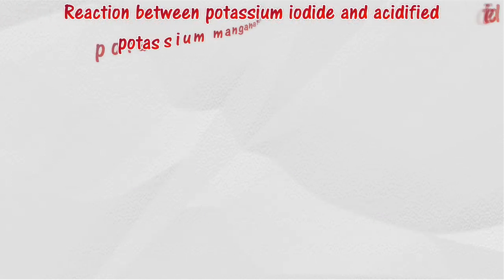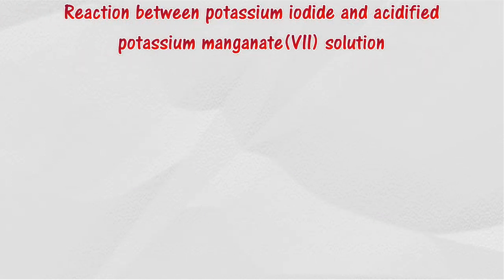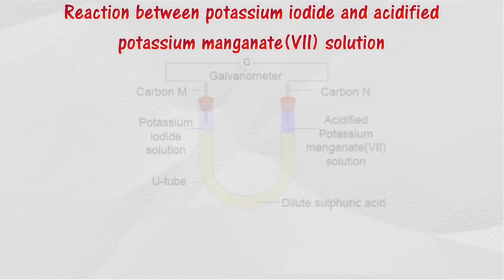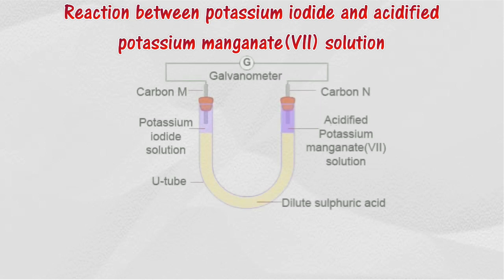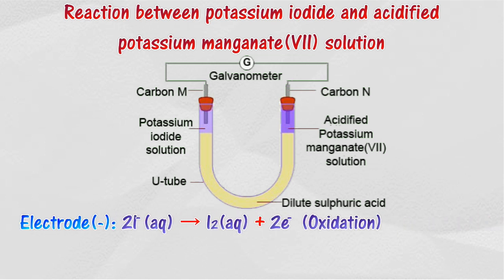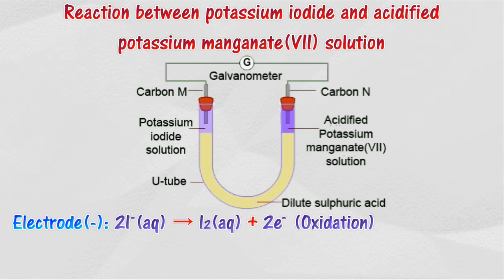Transfer of electrons at a distance for the reaction between potassium iodide and acidified potassium manganate(VII) solution. In this reaction, iodide ion releases electrons and is oxidized to iodine. The carbon electrode immersed in potassium iodide solution acts as the negative electrode.